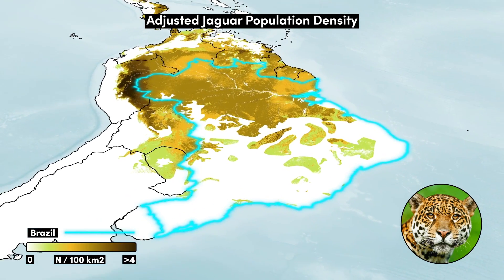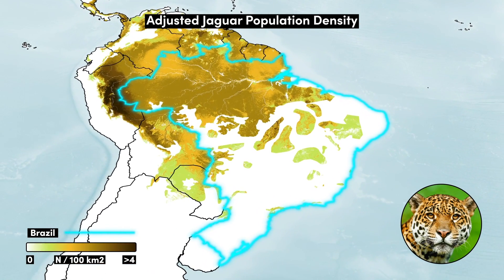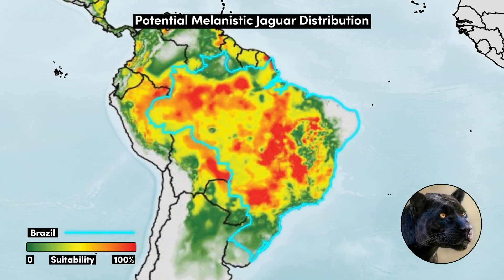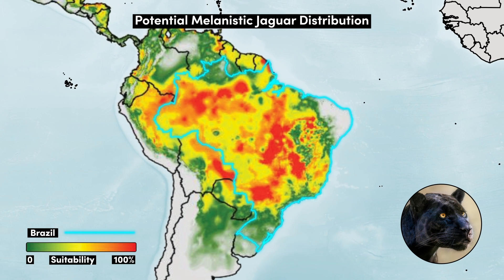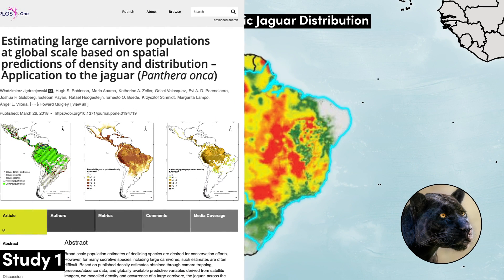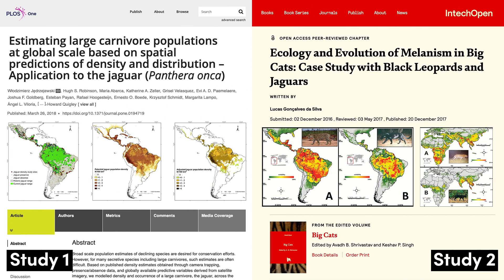Brazil is likely home to well over 80,000 jaguars, in addition to some of the highest densities of melanistic jaguars, according to the results of two fascinating studies.